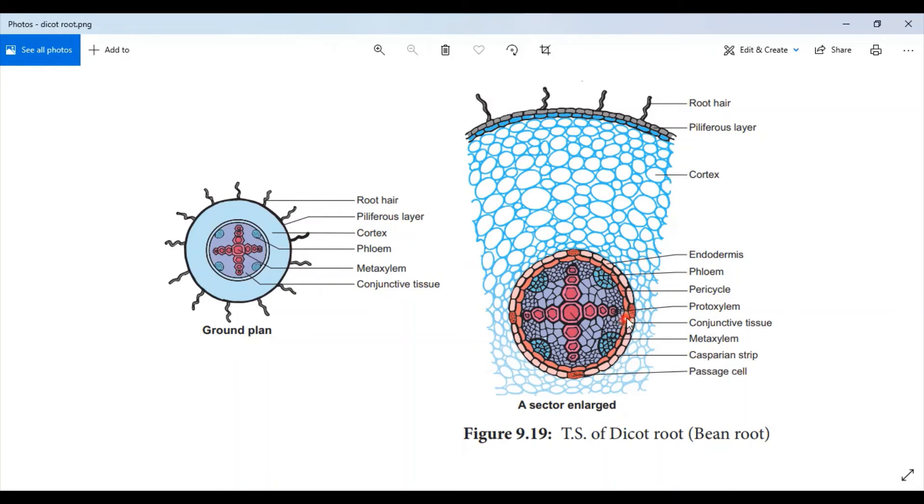Next is the vascular system. Vascular bundles are radial. Xylem and phloem strands are arranged on alternate radii which are separated by parenchyma tissues known as conjunctive tissue.